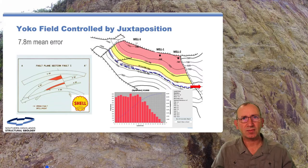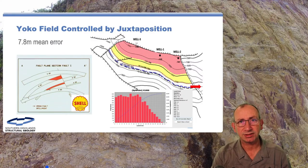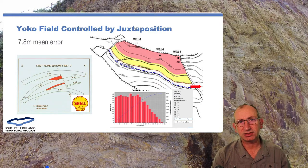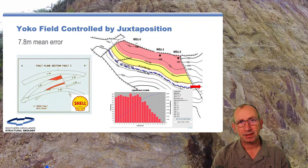Today we're going to be looking at the Niger Delta. We examined a number of examples of the Niger Delta and compared those using the methodologies that Shell have written about. What we found is that if we use good juxtaposition analysis we can have a pretty good understanding and explanation of fluid contacts. It turns out that Shell's original papers from the 60s, 70s, and 80s really do work.